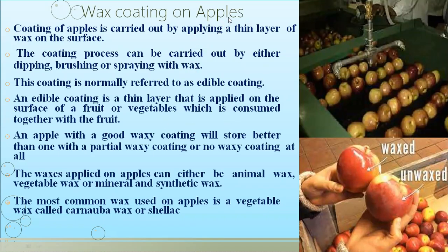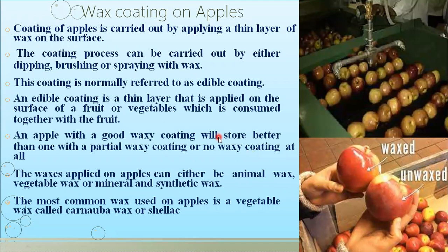Now we will see wax coating on apples. The coating of apples is carried out by applying a thin layer of wax on the surface, using methods such as dipping, brushing, or spraying. This coating is normally referred to as an edible coating — a thin layer applied on the surface of fruits and vegetables that is consumed together with the fruit. An apple with a good waxy coating stores better than one with a partial or no waxy coating. The waxes applied on apples can be animal wax, vegetable wax, or mineral-based waxes. The most common types used for apples are carnauba wax and shellac wax.